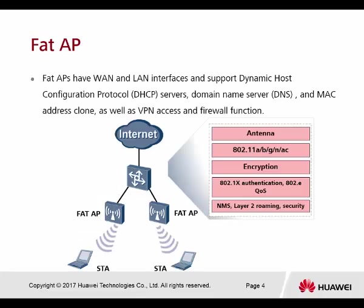FAT APs have a WAN and LAN interface and support Dynamic Host Configuration Protocol (DHCP), DNS, MAC, REST, and VPN. Some products also support the firewall feature. This AP behaves like a router, and can do almost all routing features.